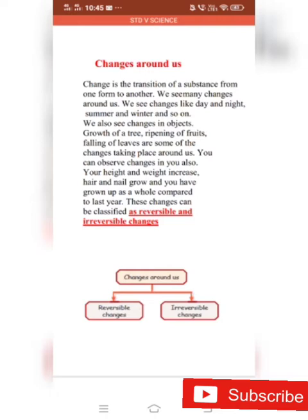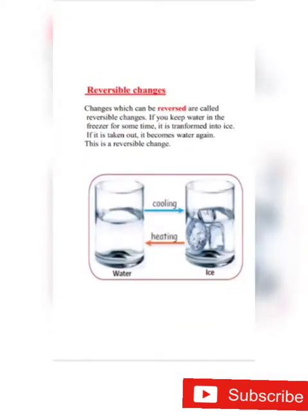First we'll move on to reversible changes. Changes that can be reversed are called reversible changes. For example, if you keep water in the freezer for some time, it is transformed into ice. If it is taken out, it becomes water again. So this is a reversible change.